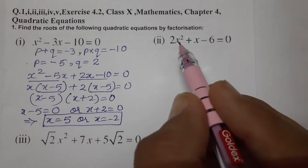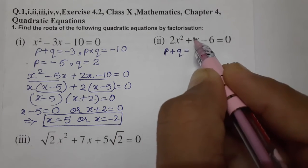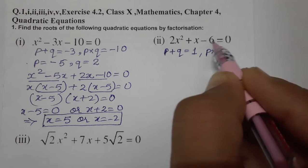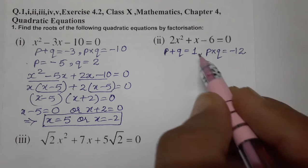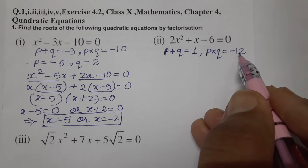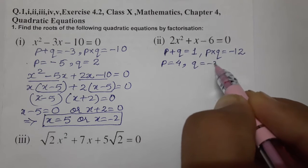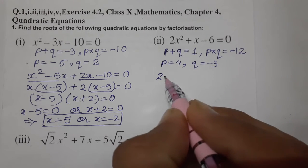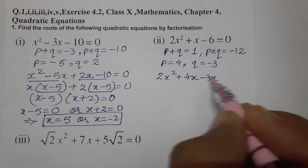Now let's come to the second question: 2x² + x - 6 = 0. Apply the same method. On adding we need 1, and on multiplying we need 2 × (-6) = -12. Think of two numbers with sum 1 and product -12. The factors of 12 are 4 and 3, so 4 - 3 = 1. Therefore p = 4 and q = -3. Now do middle term split.